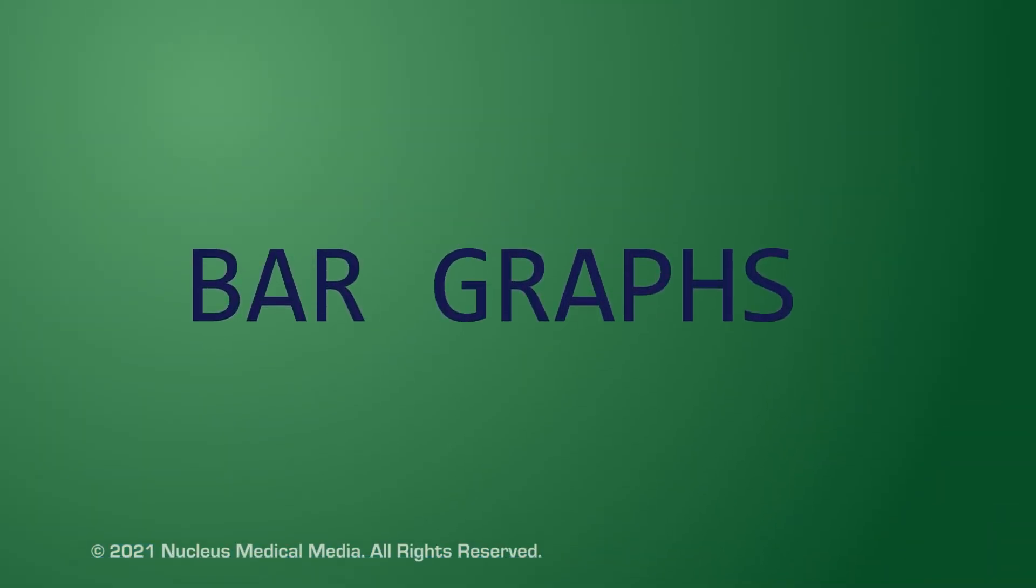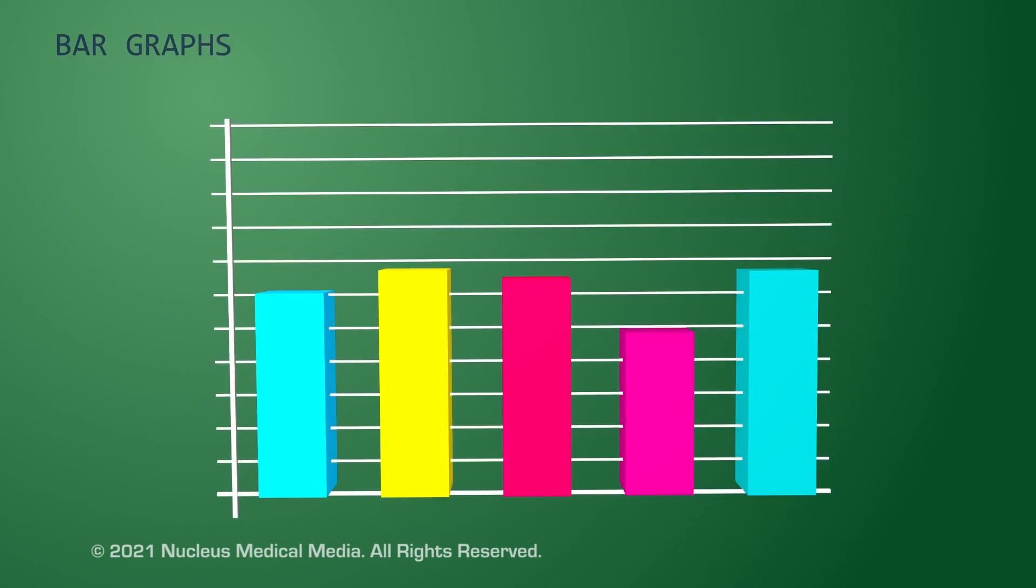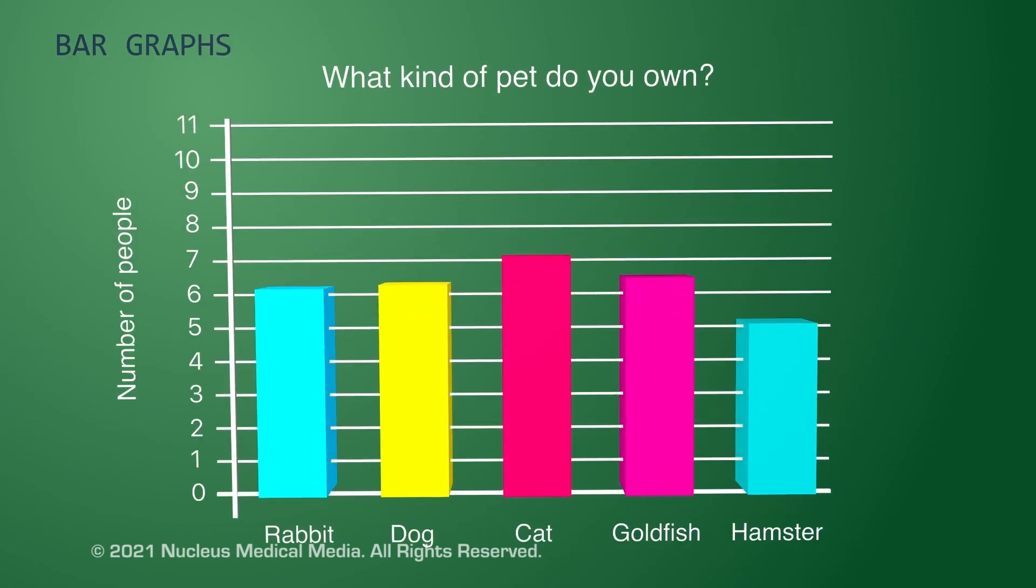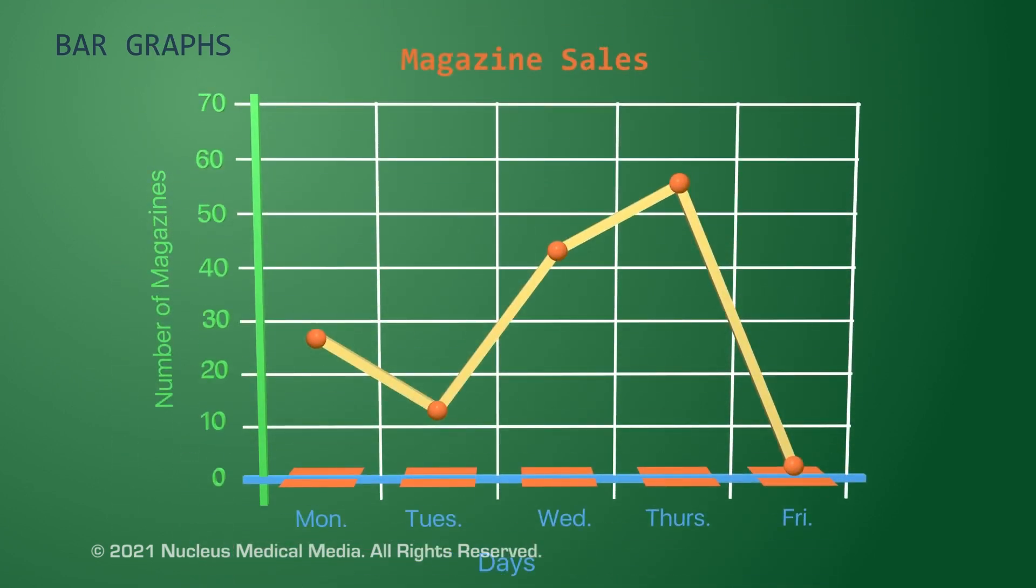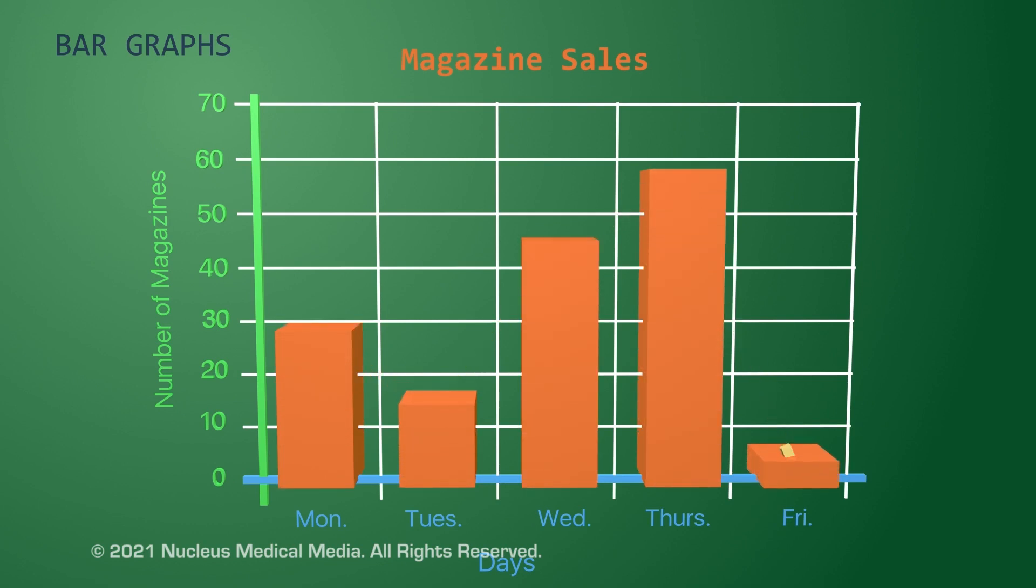Now we move to bar graphs. A bar graph can compare different groups such as the number of people who own different pets. Like line graphs, a bar graph can also track changes over time.